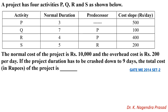In this lecture, we will discuss the gate previous problem on crashing of a project. Here, four activities P, Q, R, and S are given with normal duration, predecessor activity, and cost slope. Also given are the normal cost of the project and the overhead cost. If the project duration has to be crashed down to 9 days, what is the total cost of the project?